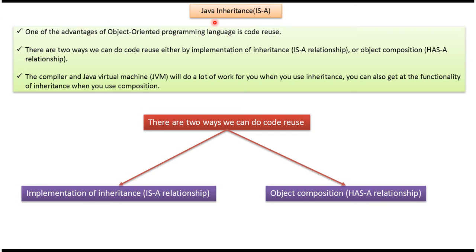Hi, this video tutorial I will cover Java inheritance is-a relationship. One of the advantages of object oriented programming is code reuse. And there are two ways we can do code reuse. The first way is implementation of inheritance is-a relationship. And the second way is object composition has-a relationship. The compiler and Java virtual machine will do a lot of work for you when you use inheritance.